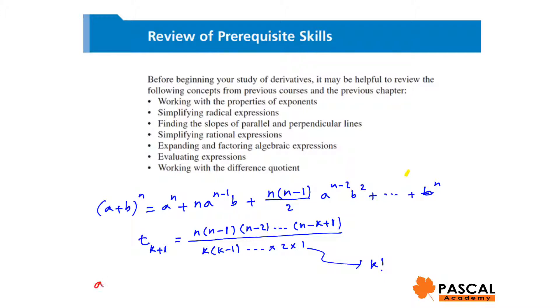One important point is factoring a to the power of n minus b to the power of n, which is a minus b, times a to the power of n minus 1, plus a to the power of n minus 2 times b, plus similar terms till we get to b to the power of n minus 1.